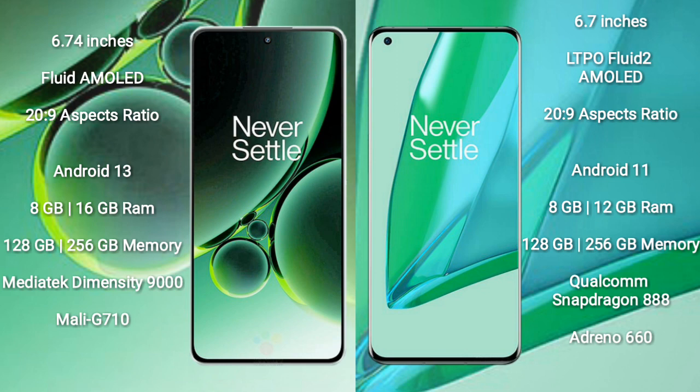The OnePlus Nord 3 runs on the Android 13 operating system, while the OnePlus 9 Pro runs on Android 11. The OnePlus Nord 3 comes with 8GB or 16GB RAM and 128GB or 256GB internal storage.